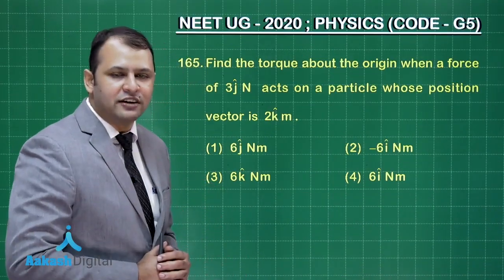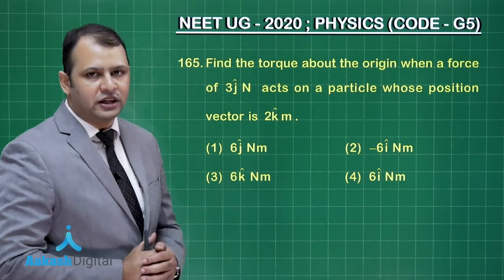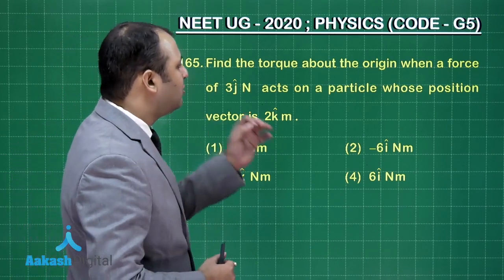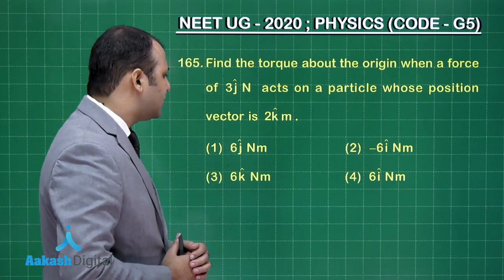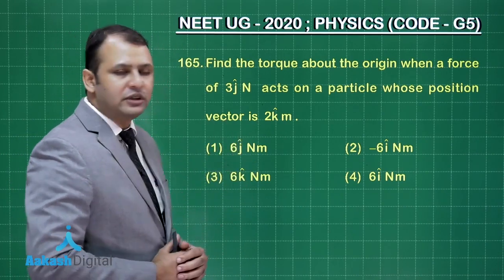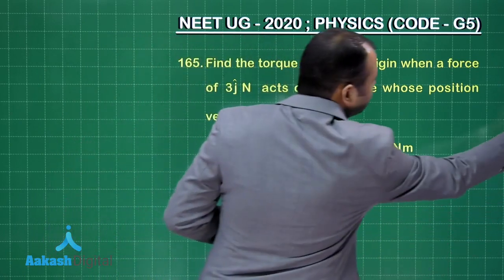Now this question, question number 165, is from the chapter system of particles where we have to find the torque about the origin when a force of 3j cap Newton acts on a particle whose position vector is 2k cap meters. So what is the relation between them?